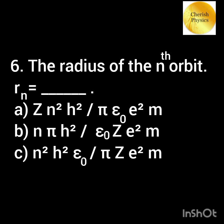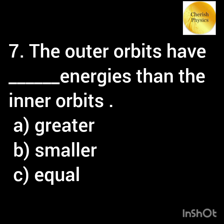The radius of the nth orbit, for n equal to? The outer orbits have dash energies compared to the inner orbits.